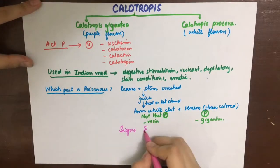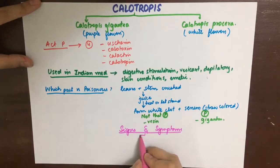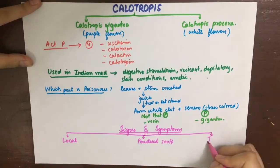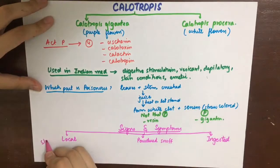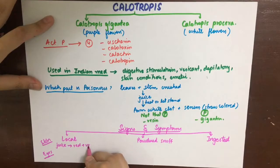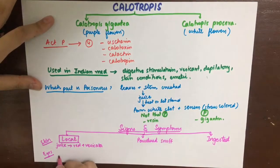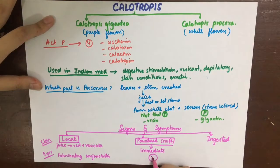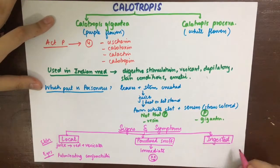The signs and symptoms of Calotropis poisoning depend on the route of administration: locally on skin, snuffed as powder, or ingested. Locally, the juice will cause redness and vesication, while in the eyes it will cause fulminant conjunctivitis — fulminant describing its acute and rapidly escalating appearance. If snuffed in powder form, it causes immediate death.